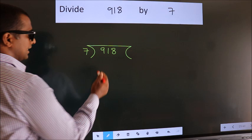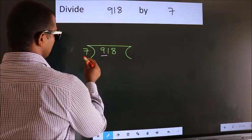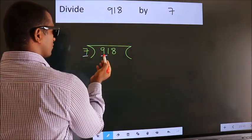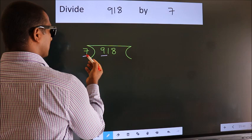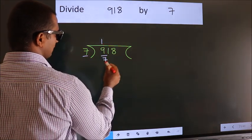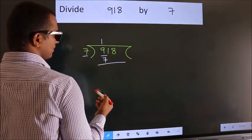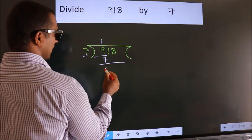Next. Here we have 9. Here 7. A number close to 9 in 7 table is 7 1s 7. Now we should subtract. We get 2.